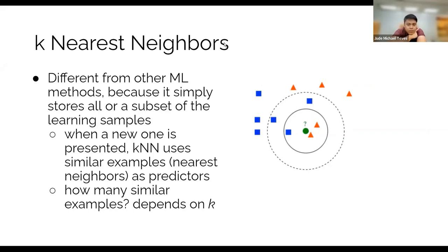What is the predicted class if you have this example right here? It's class red, right? So that simple.